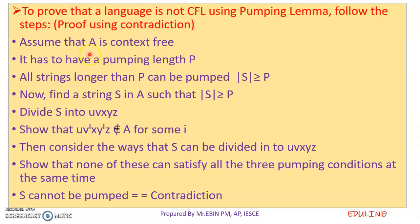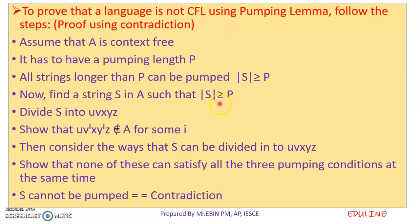Assume that A is context-free. We assume that assumption leads to a contradiction. In a context-free language, there must be a pumping length P. All strings longer than P can be pumped. We find a string S in A such that the length of S is greater than or equal to P.